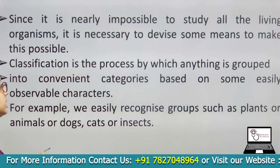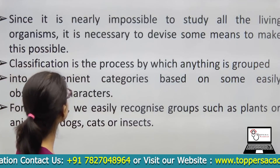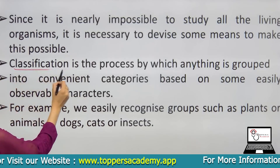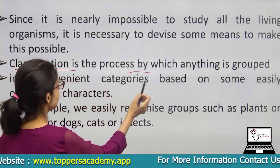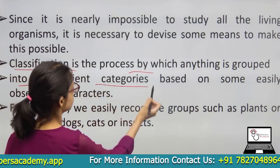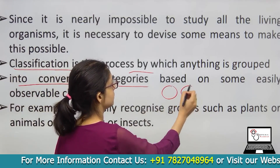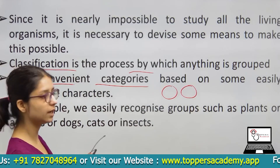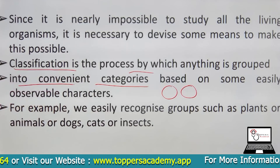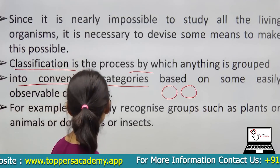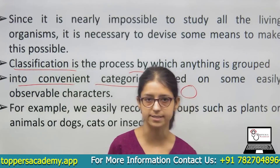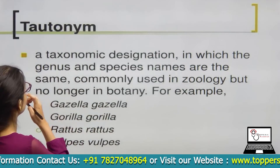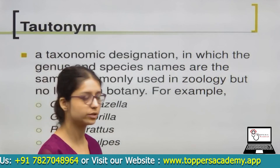Since it is nearly impossible to study all living organisms individually, it is necessary to devise some means to make it possible. Classification is the process by which anything is grouped into convenient categories, that is, the grouping of organisms on the basis of their characters. We can easily recognize groups such as plants, animals, dogs, cats, or insects.